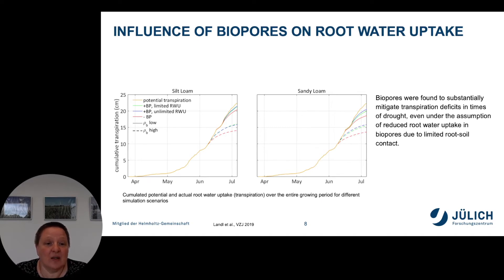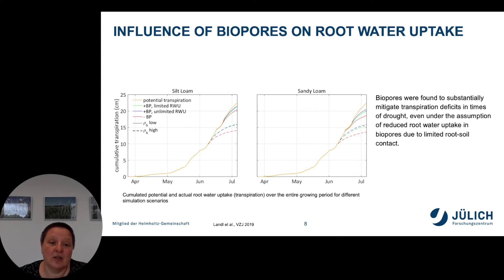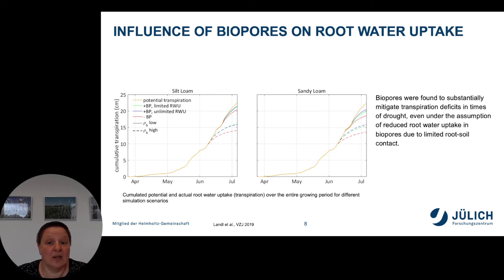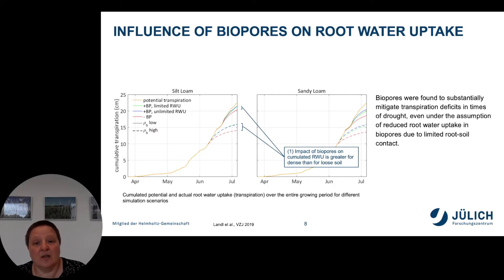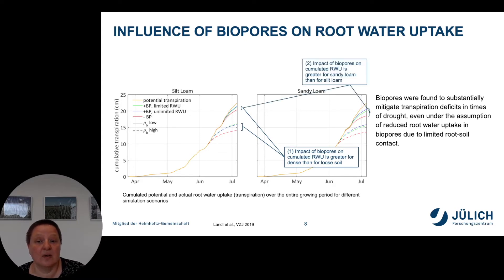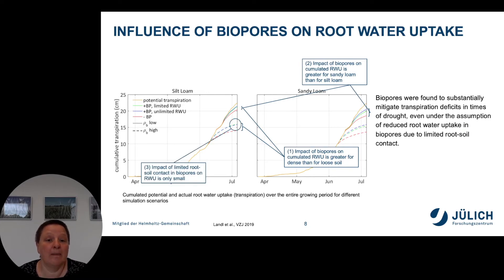On this graph you see the cumulative transpiration in two different types of soils, namely a silt loam and a sandy loam. The orange line indicates the potential transpiration, whereas the colored lines indicate the cumulative transpiration under different treatments including or not including biopores and considering or not considering the limited root-soil contact in the biopores. The solid and dashed lines indicate low and high soil bulk densities. The impact of biopores on accumulated root water uptake is greater for dense than for loose soils, and greater for the sandy loam than for the silt loam. The impact of limited root-soil contact in biopores on root water uptake is only small.